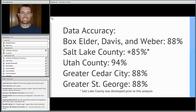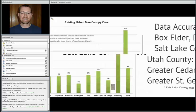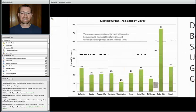Overall accuracies came out at 88% and 85%. Utah County came out very well — we spent a little more time working on Utah County and then Cedar City and St. George.